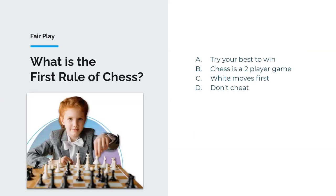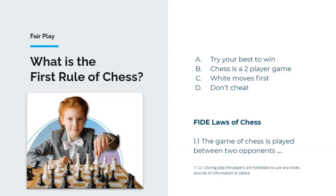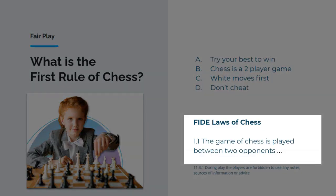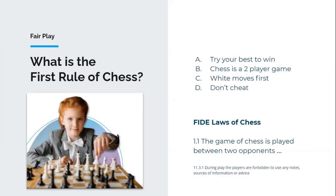The first thing to think about when talking about Fair Play is: what is the number one rule of chess? Should you be trying your best to win? Don't cheat? The answer, from FIDE, is Rule 1.1 in the FIDE Laws of Chess: chess is a game played between two players. As soon as somebody gets help from an engine, a computer, another player, or a book, it's no longer a game of chess between two players.